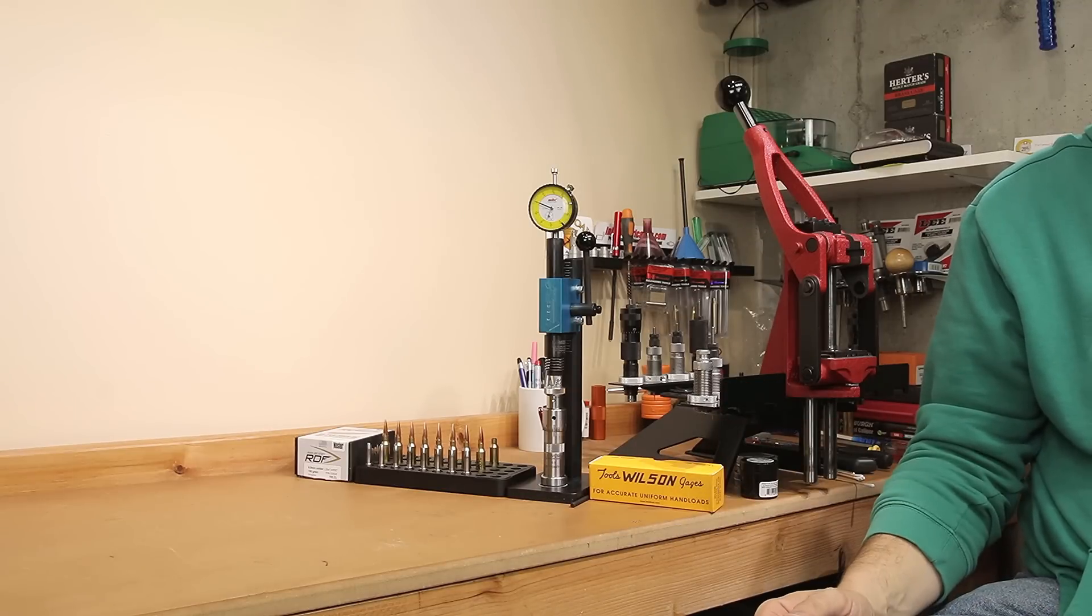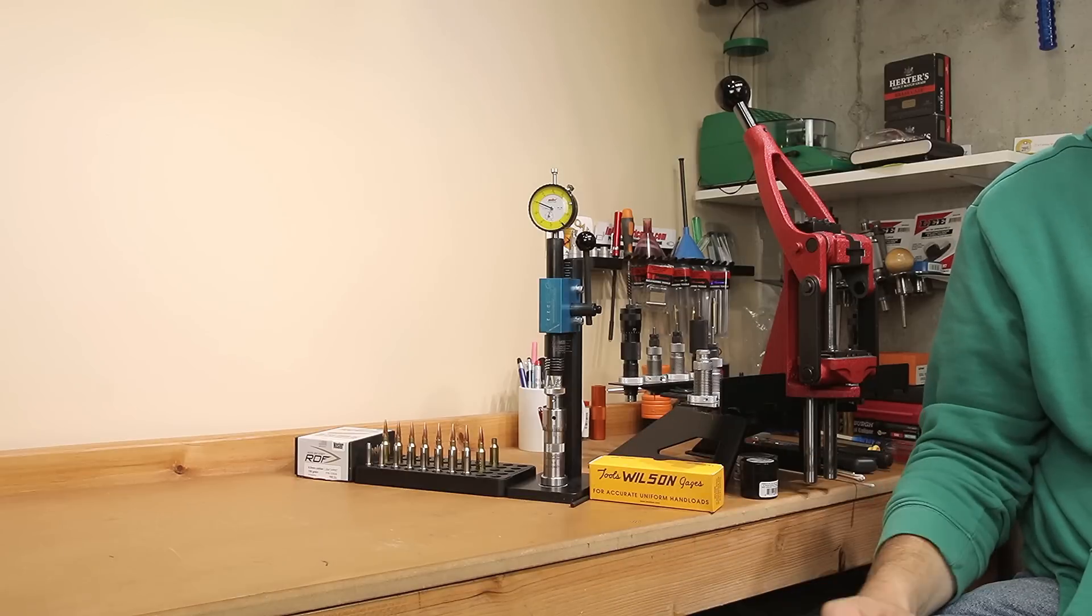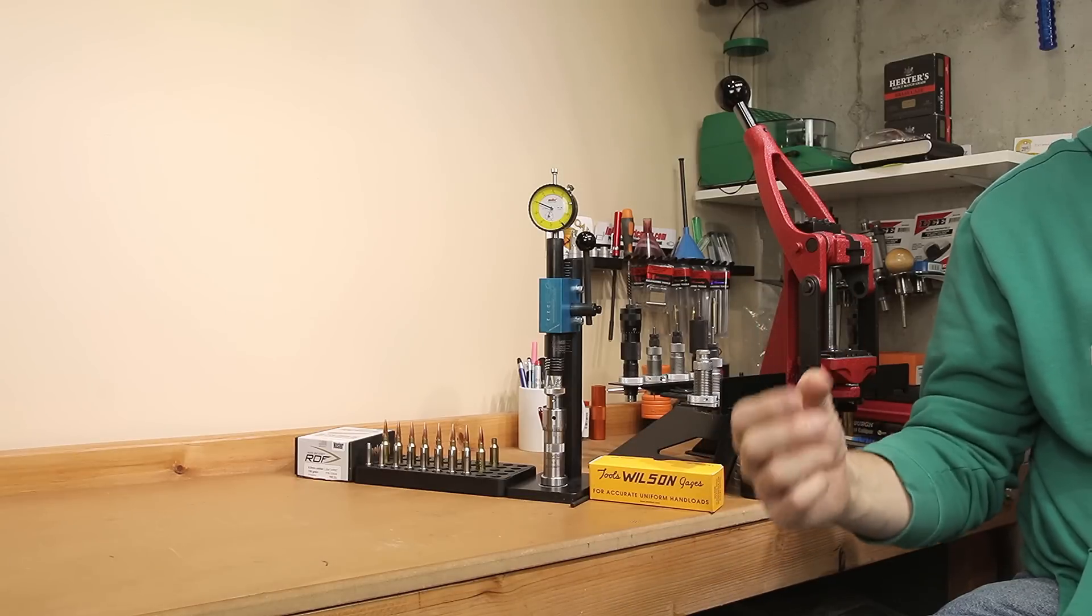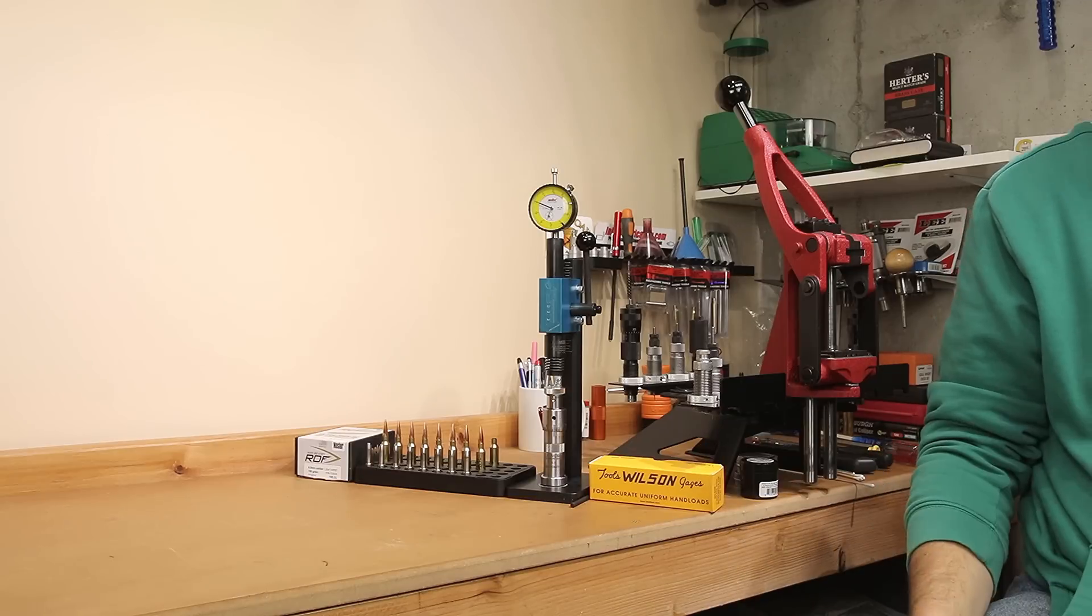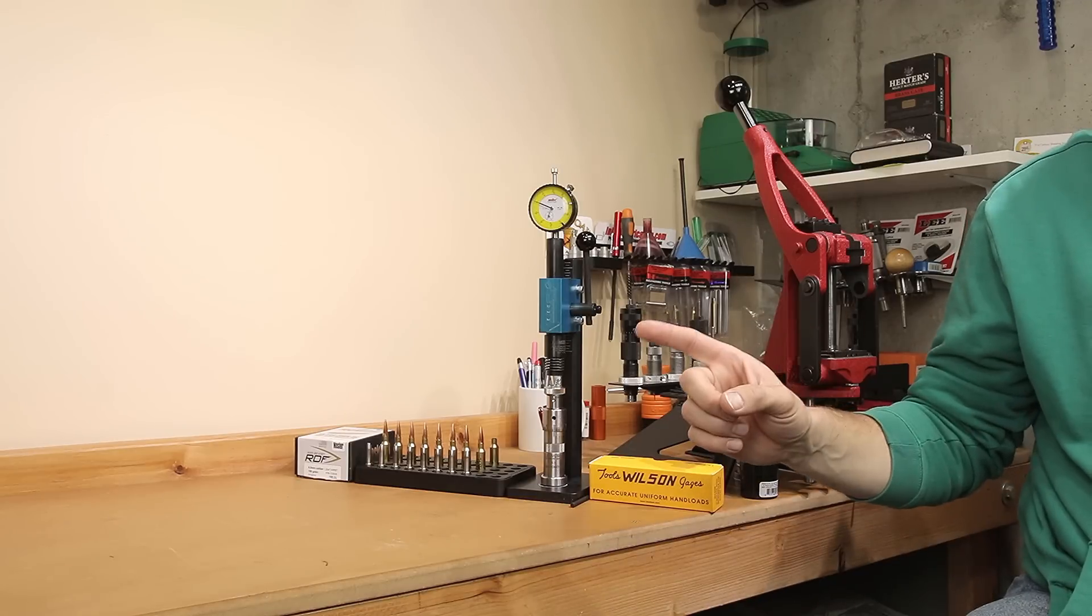This is only 25 thousandths less than what Nosler recommends for this cartridge overall length. This should give us a very good amount of the projectile in the case and allow us to see those seating force changes. To give you the best representation possible, we're going to run through these one at a time.